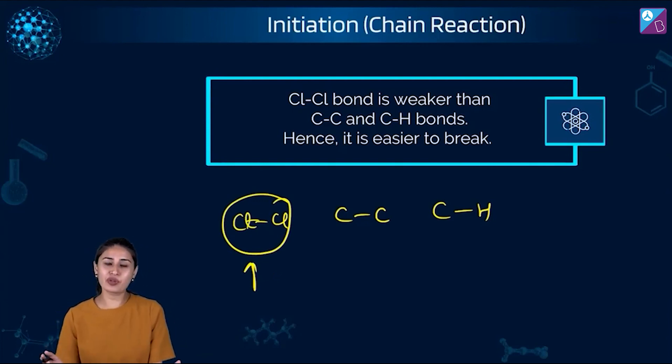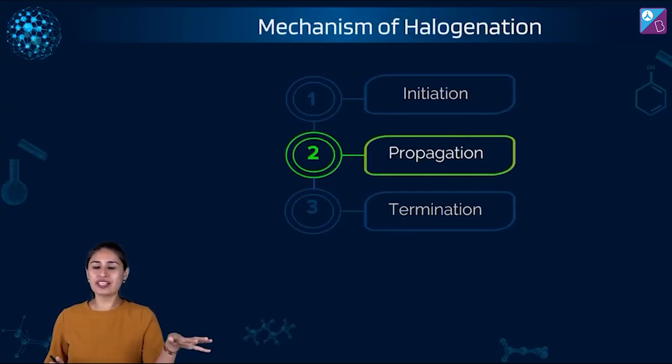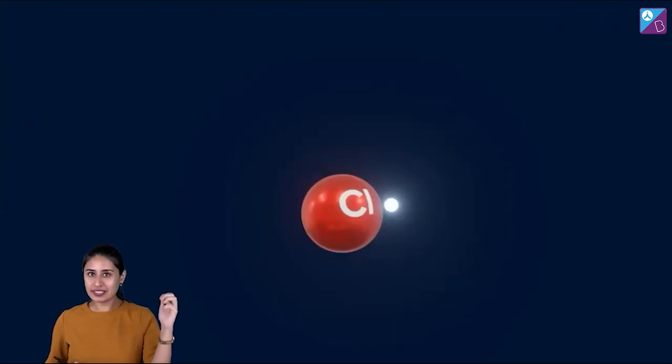Now that we have chlorine free radical formed, you know, there is going to be havoc. So let's now see the propagation step. We know that chlorine free radicals have been formed. What after that? Propagation. So the second step towards the halogenation mechanism. See what's happening.